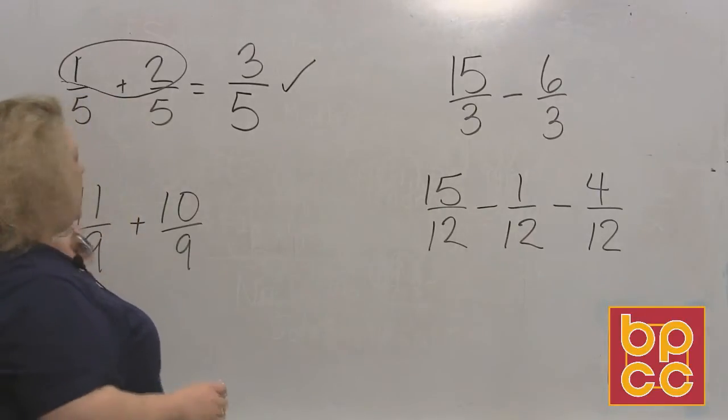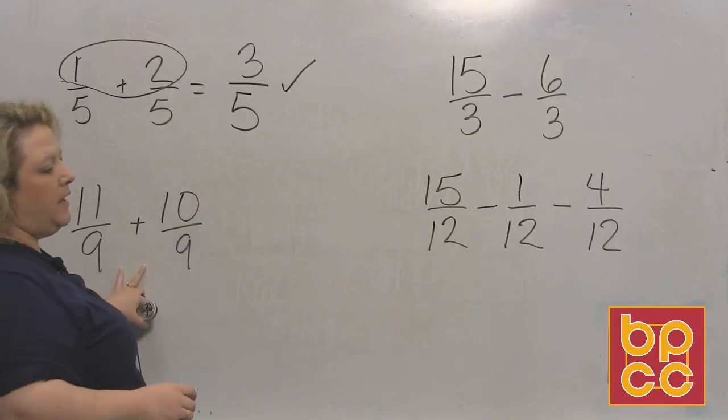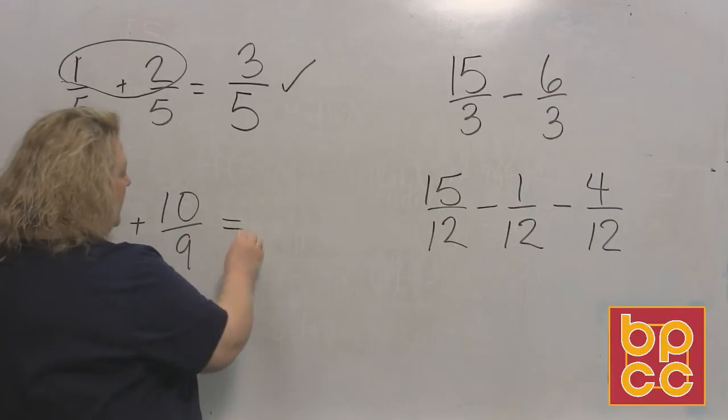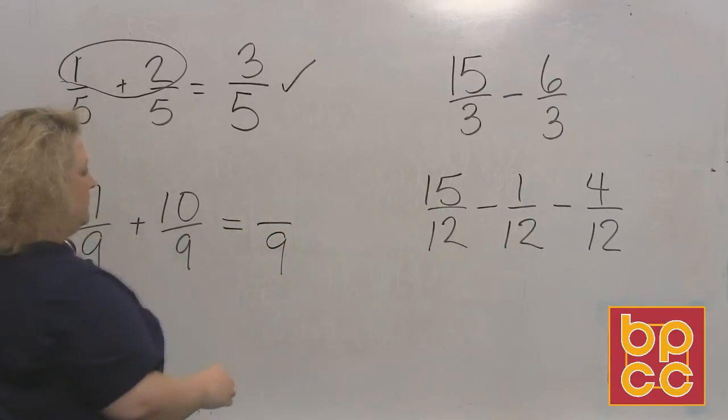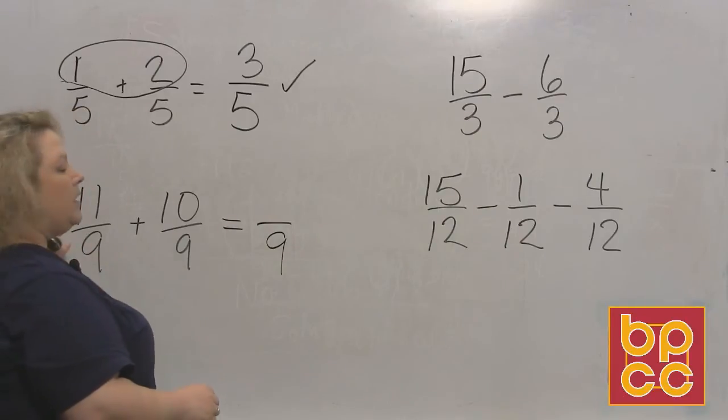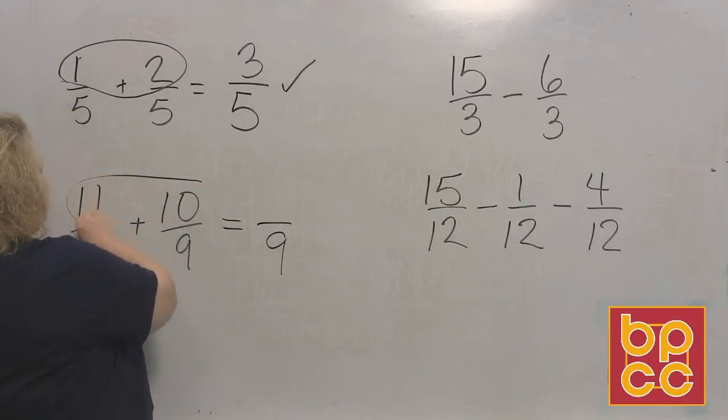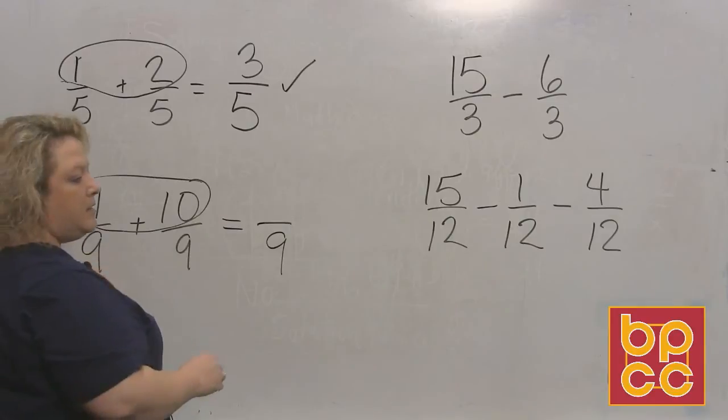Here's another one: 11/9 plus 10/9. We're adding again, all I need is an LCD, which is nine and I have that. So I write the bottom, collect the top. When I collect the top this time I get 21.